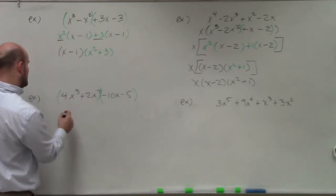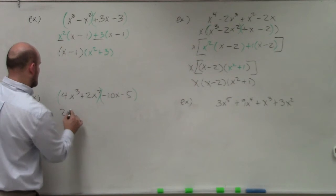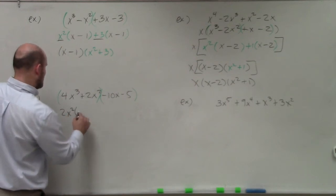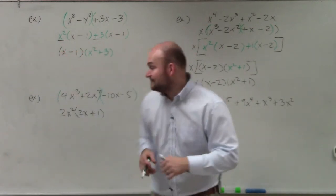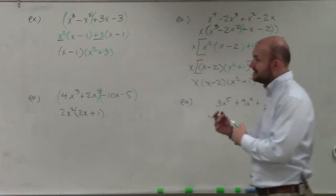Now I want to see what I can factor out here. And you can see I can factor out a 2x². By factoring out 2x², I'm left with a 2x plus 1. And then for the -10x - 5, you can see that I can factor out a negative 5.